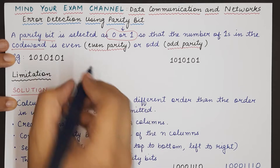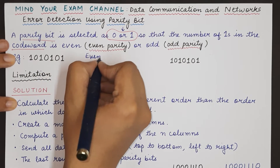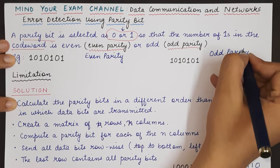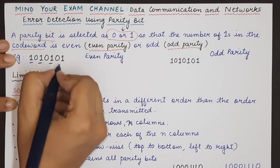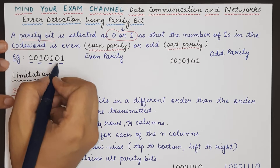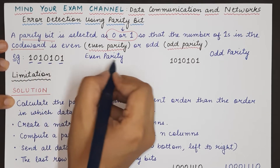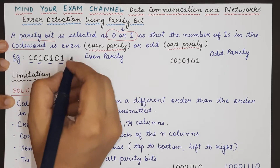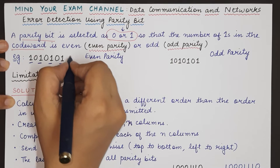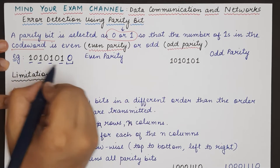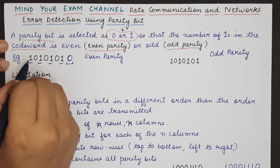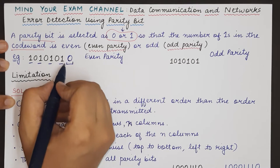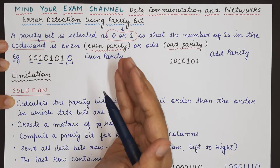Let's take an example. This is a codeword and suppose we are considering even parity. The first step is to count the number of 1s in the codeword — here the number of 1s is 4. Since 4 is even and we are following even parity, the codeword already has an even number of 1s, so we append a parity bit with value 0. If the number of 1s had been odd, the parity bit would have been 1, so that combined with the odd count would give an even total.